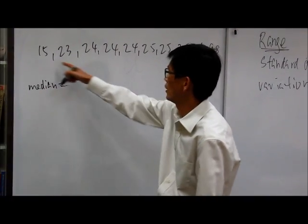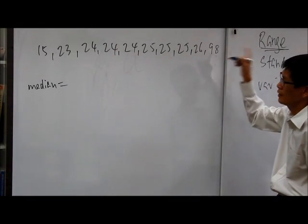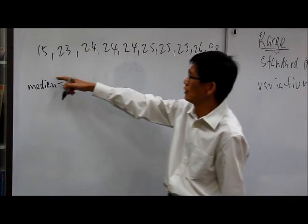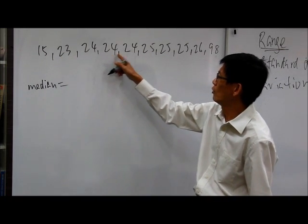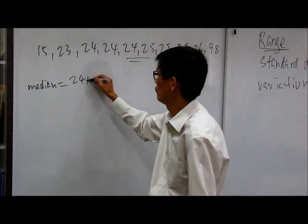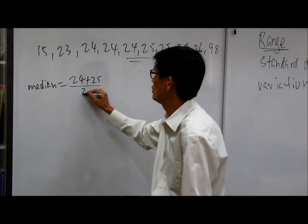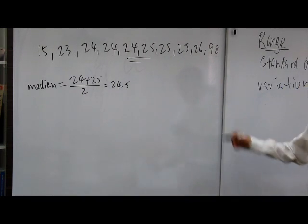The median equals... now there are how many numbers? 1, 2, 3, 4, 5, 6, 7, 8, 9, 10. 10 numbers, so the median is between the fifth and the sixth. So the median will be 24 plus 25 divided by 2, which is 24.5, right? We know the median is this.